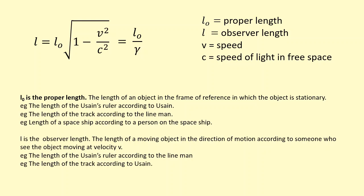The length of the track according to Usain Bolt. Remember, Usain Bolt can make the argument that the track is moving past him at a certain velocity, so to him the track would not appear to be 100 meters long, it appears shorter. And finally, the length of a moving spaceship according to someone who's standing on Earth.